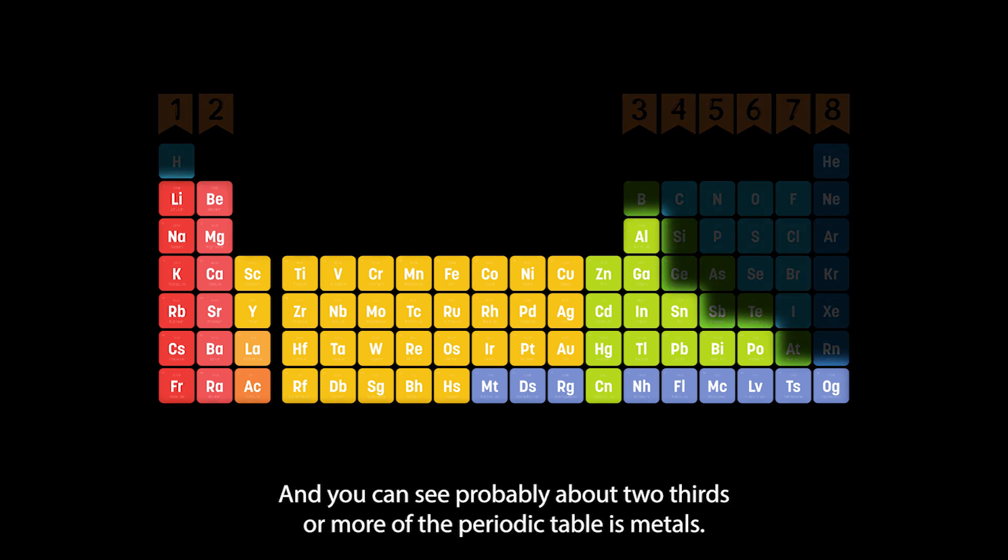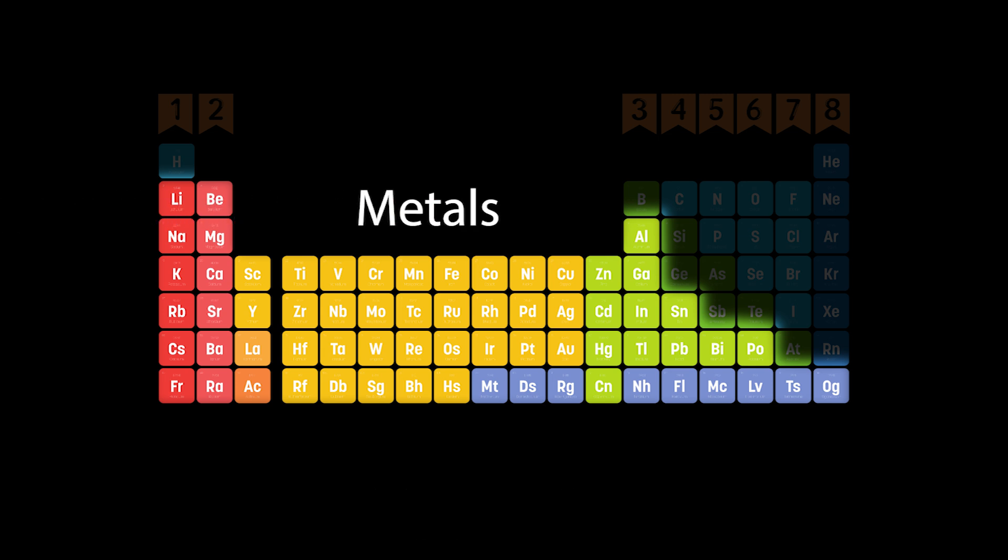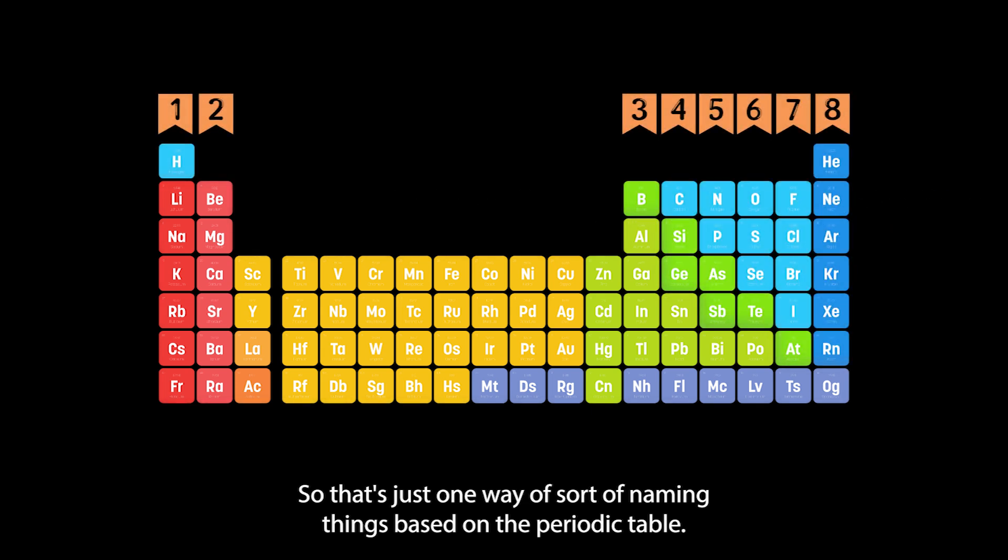As you can see, the majority of the periodic table consists of metals, and you can see probably about two-thirds or more of the periodic table of metals. That could be one way of classifying elements by the fact that if they're on a certain place in the periodic table they're called metals or maybe they're not.